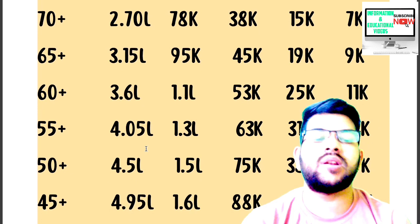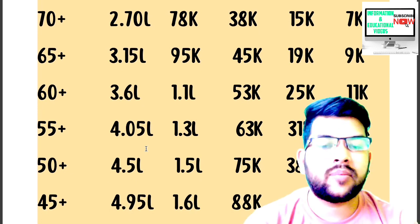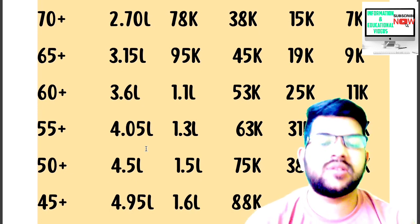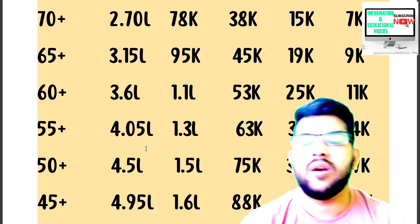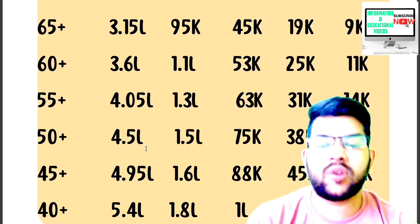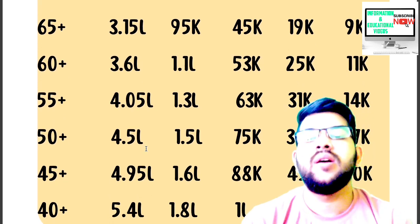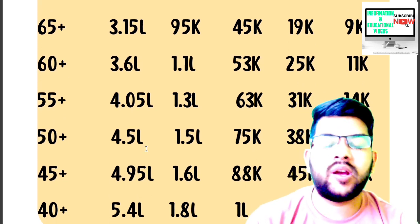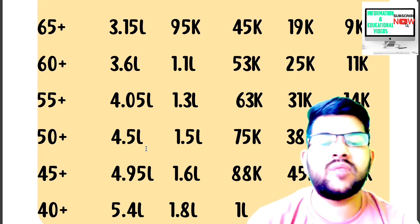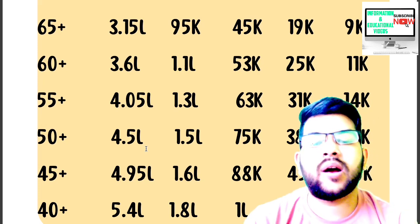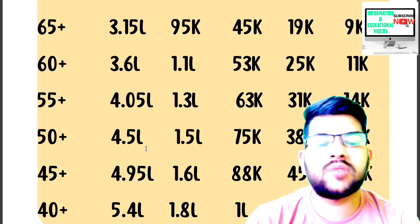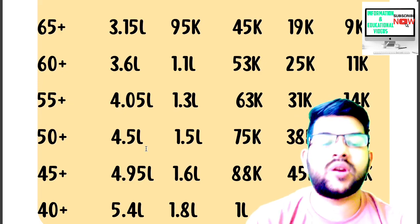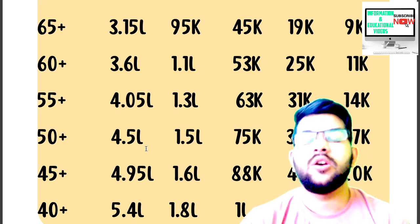For 45 plus percentile: CRL 4.95 lakh, OBC 1.6 lakh, EWS 88,000, SC 45,000, ST 20,000. For 40 plus percentile: CRL around 5.4 lakh, OBC 1.8 lakh, EWS 1 lakh, SC 52,000, ST 23,000. So this was all about the complete information regarding percentile versus your category rank.